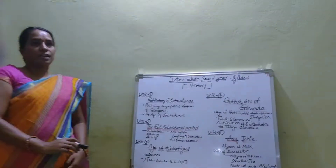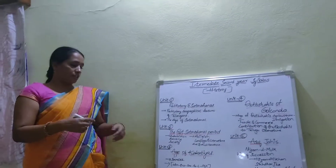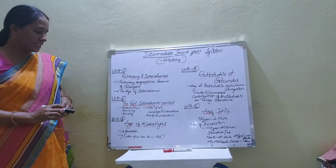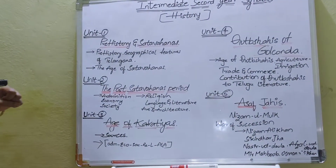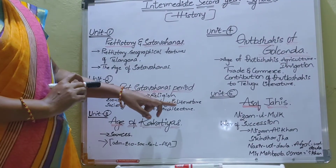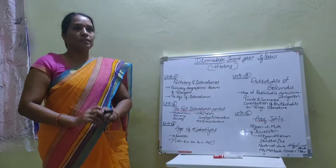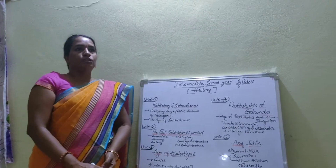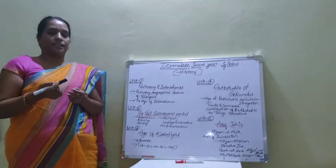The Post-Shatavahana period covers conditions of administration, economic, social, and religious aspects, as well as sources like languages, literature, and art and architecture. Also covered are dynasties like Vishnukindalis, Ichwaklas, Vishnukindalis, and Chalukyas, etc.